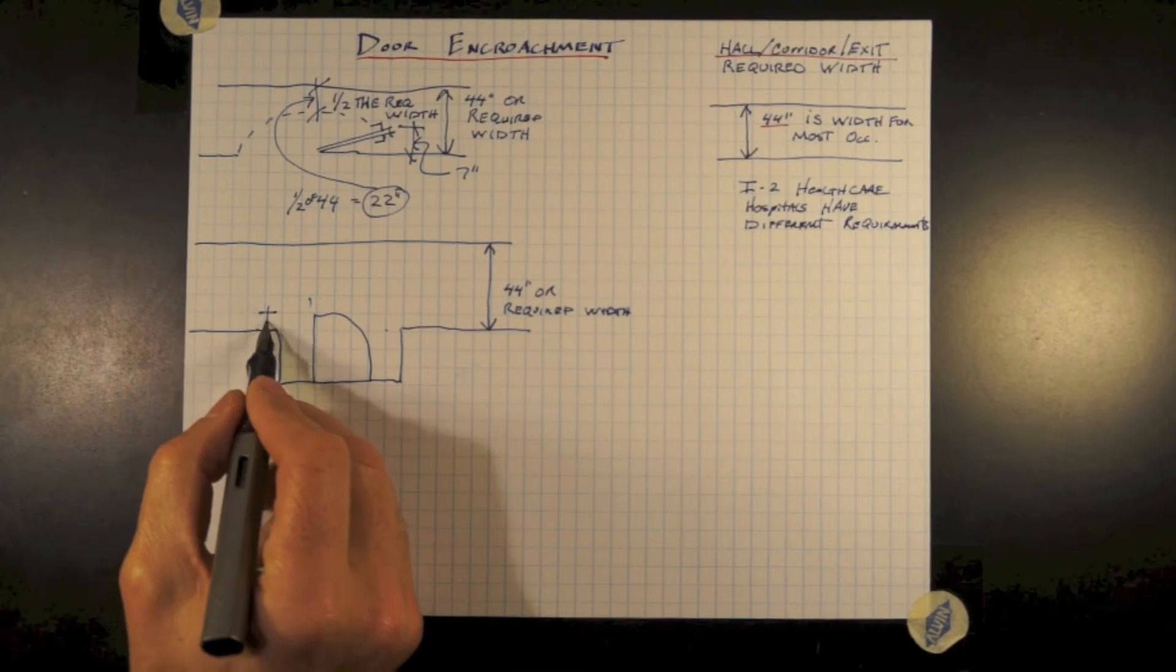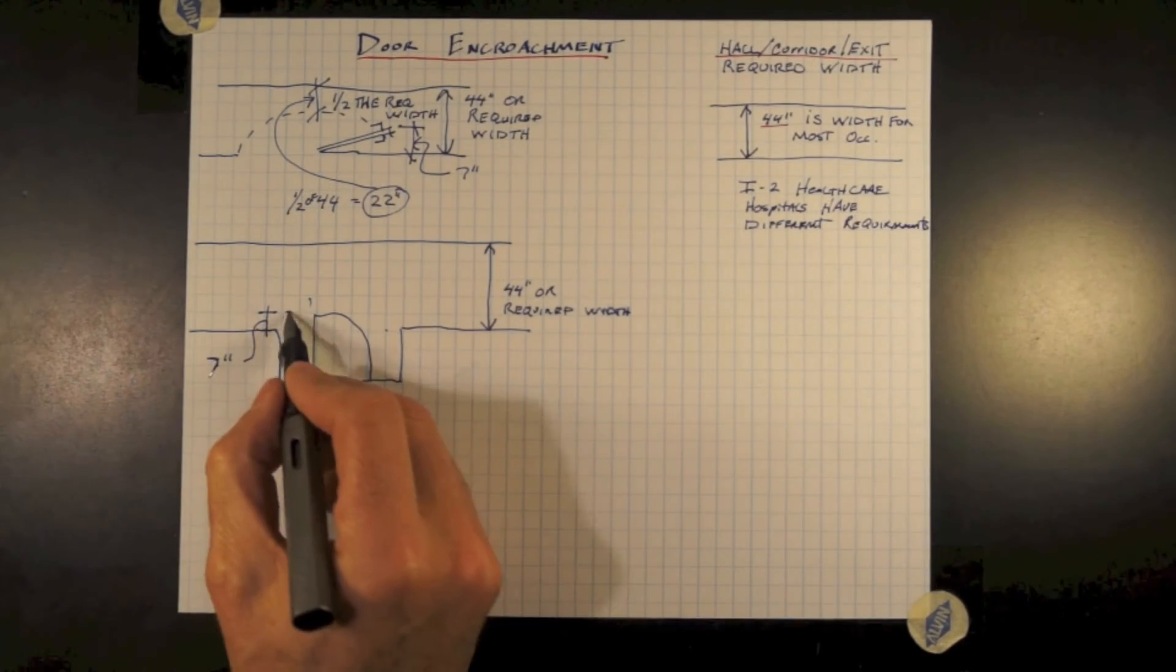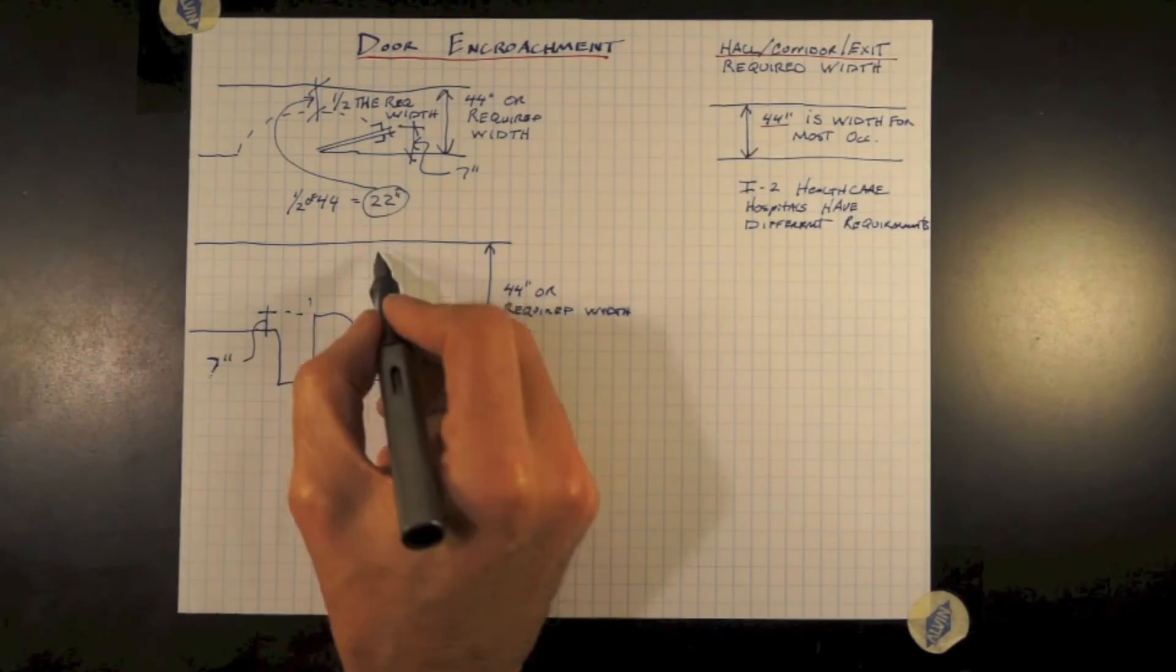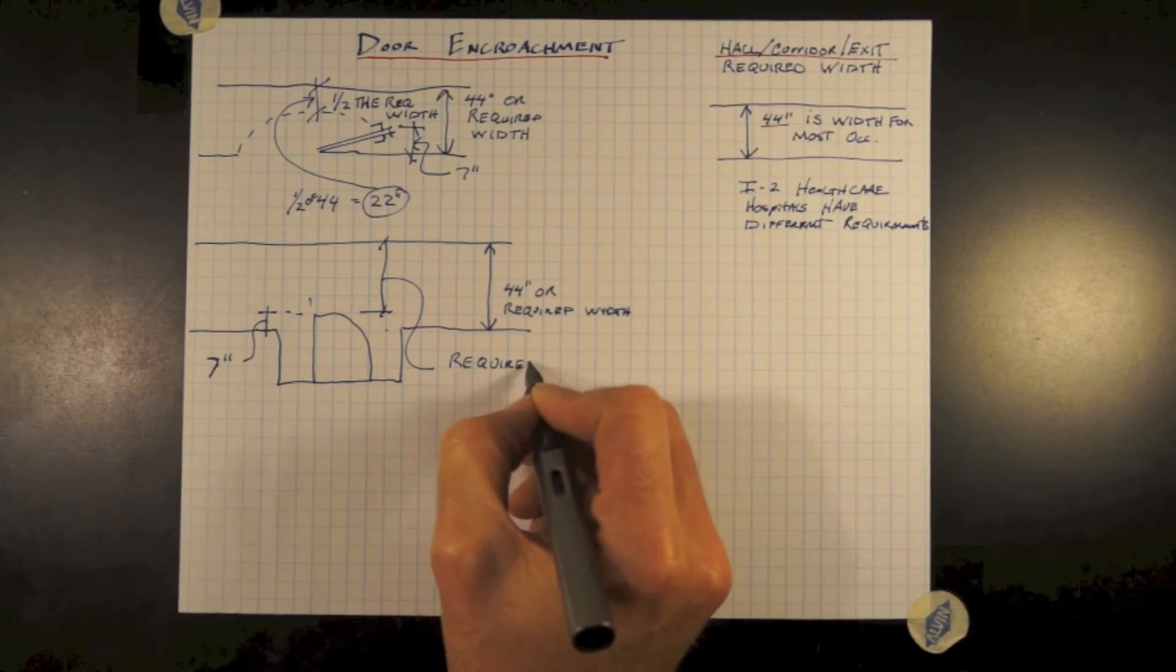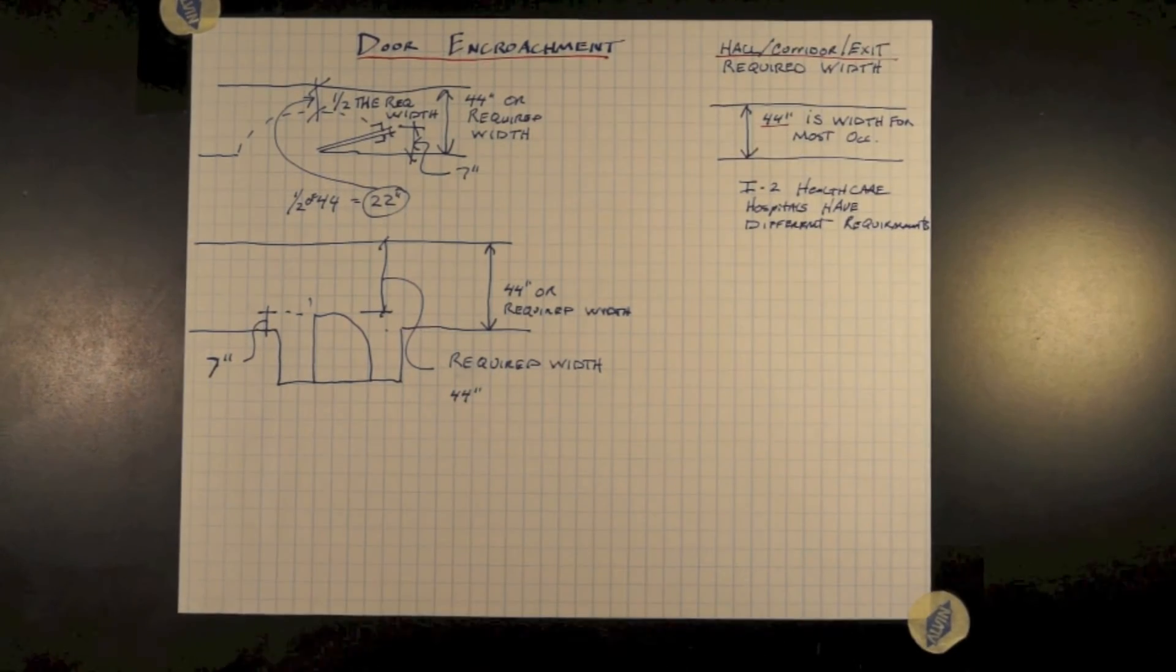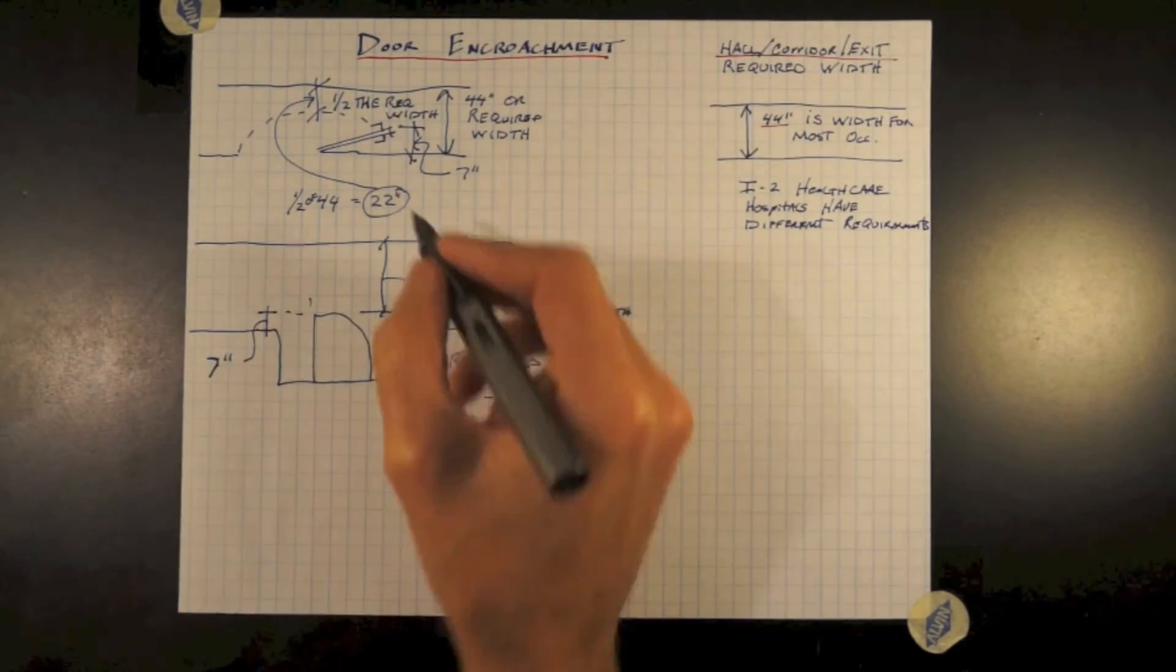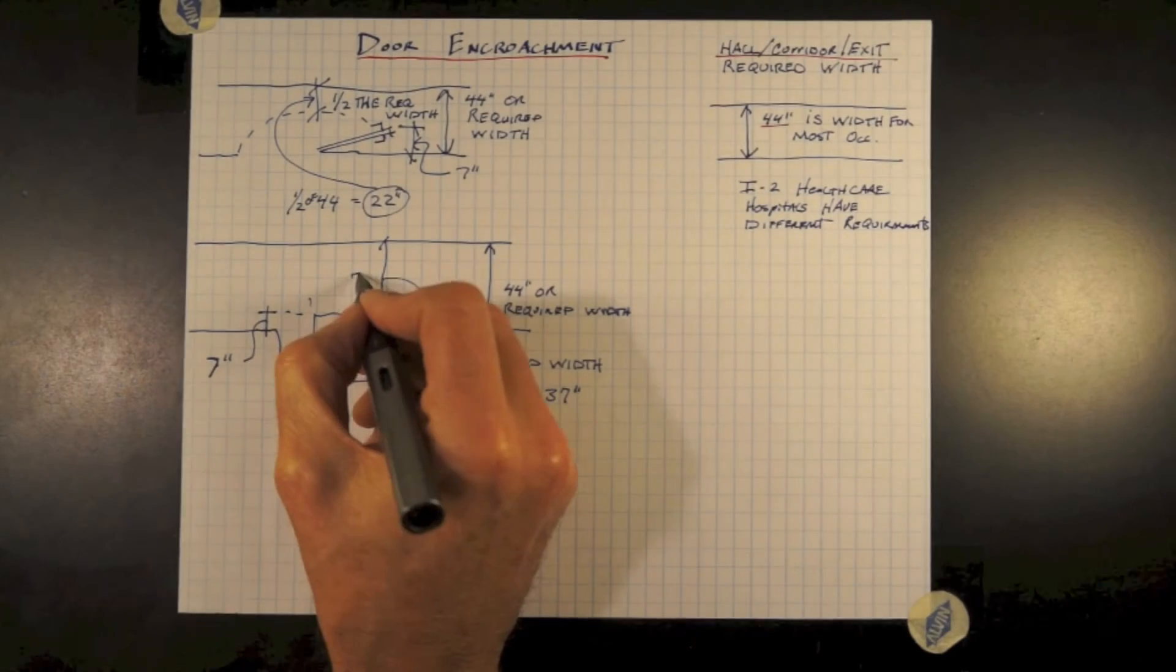Therefore, looking at this in a different way, our required width is 44 inches. Our door is allowed to protrude 7 inches into that width. Therefore, our clear opening across the corridor when the door is fully open cannot be less than 37 inches.